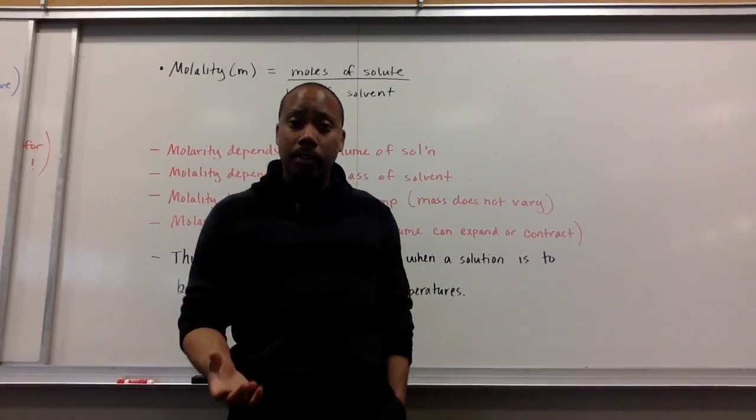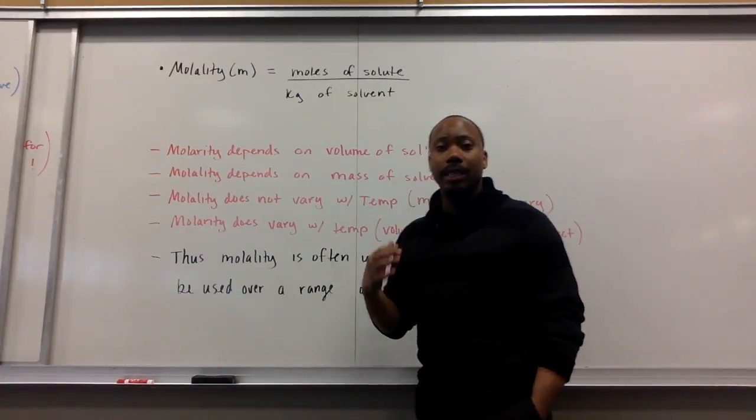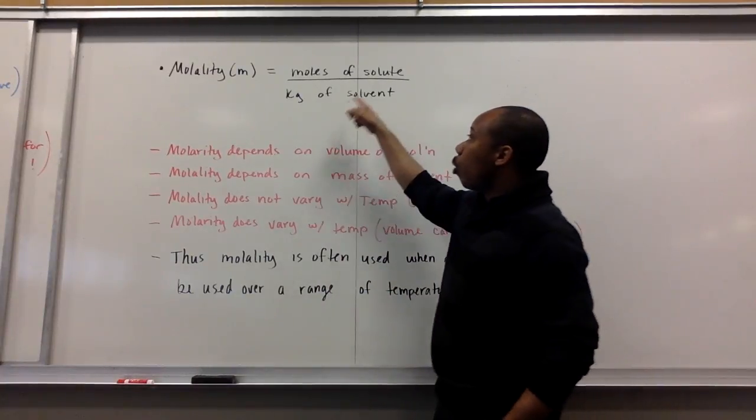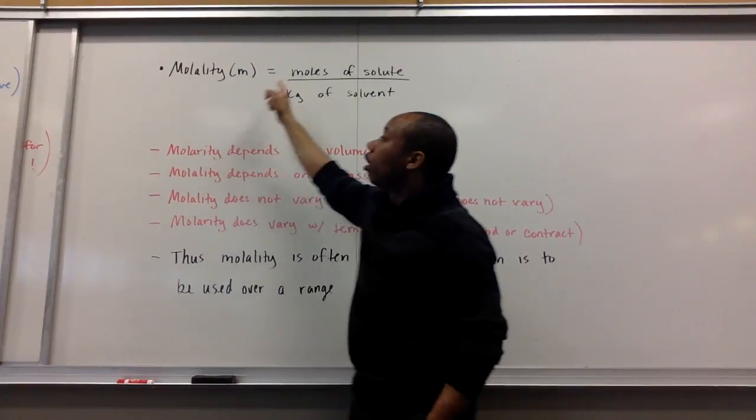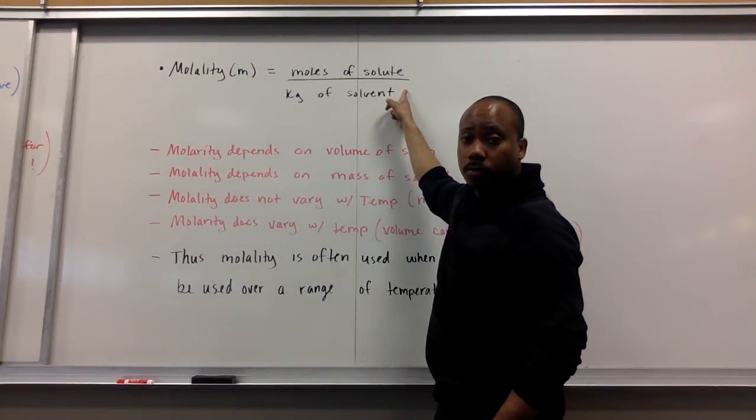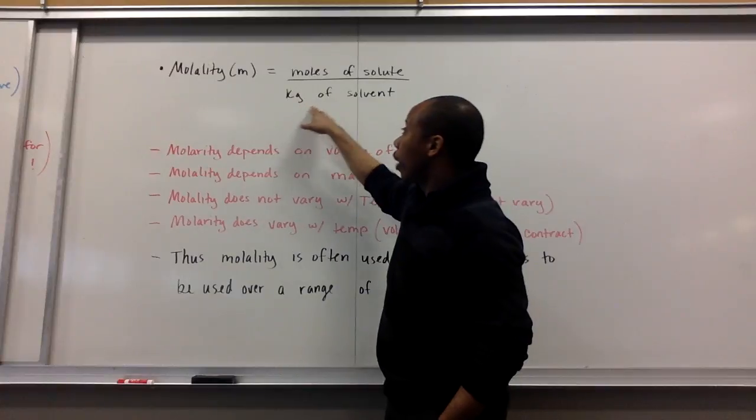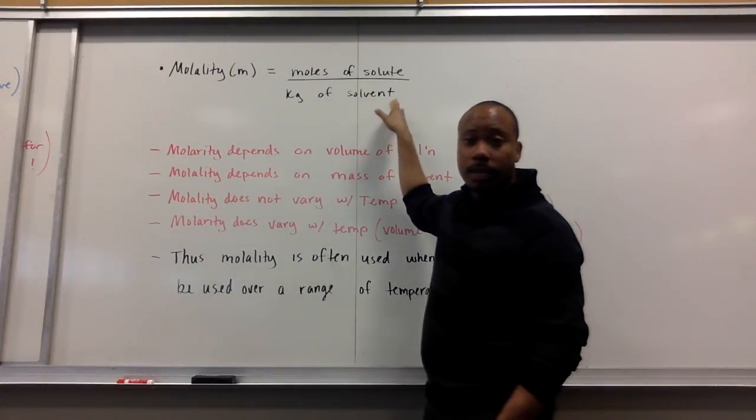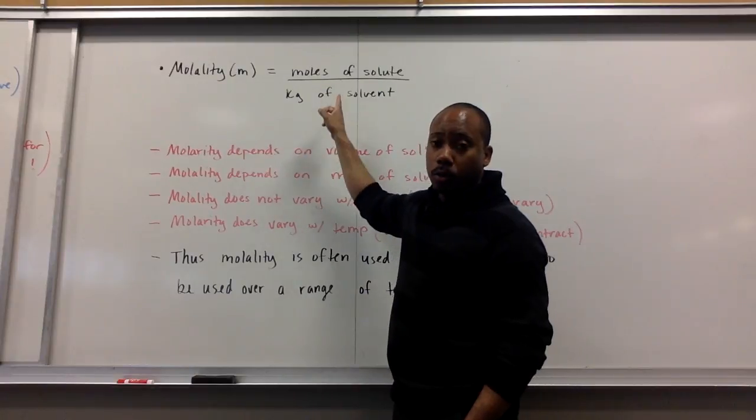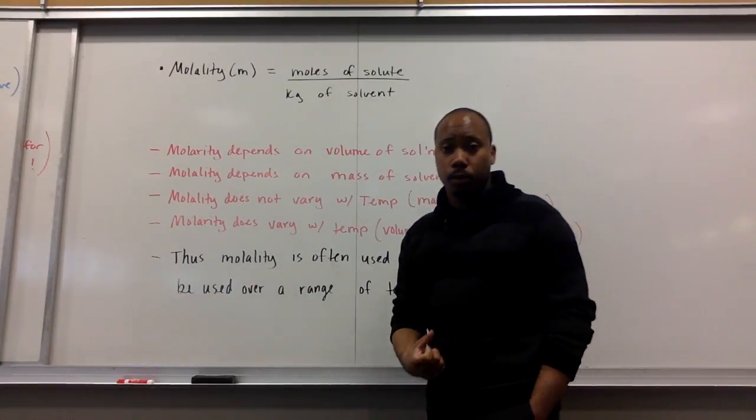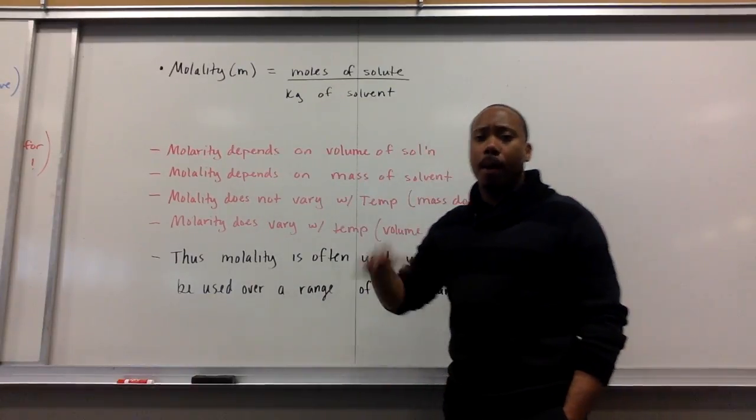And our last one is molality. This one's different. Kind of sounds like molarity, but we have an L there, molality. This is moles of your solute, given by lowercase m. Moles of your solute divided by kilograms of solvent. That's what's different between molarity and molality in the denominator. Moles of solute divided by kilograms of your solvent.